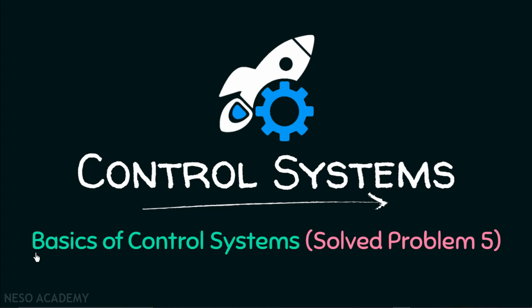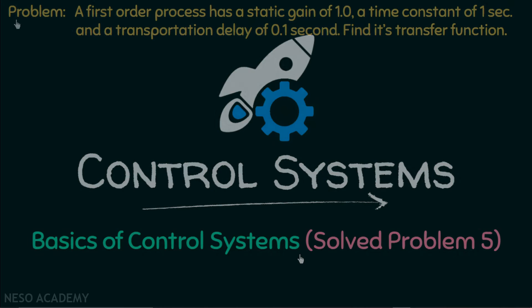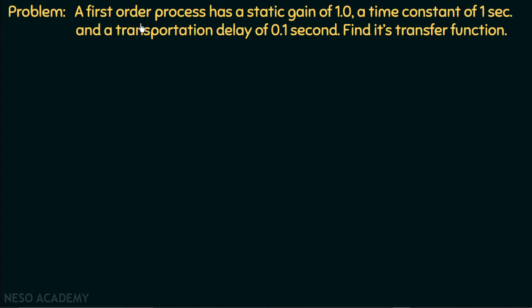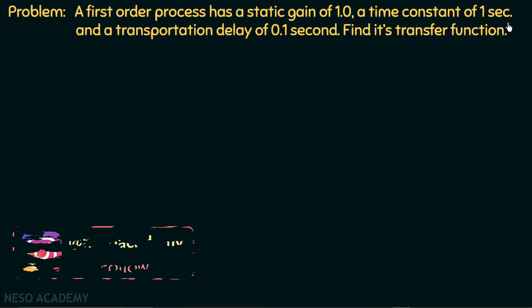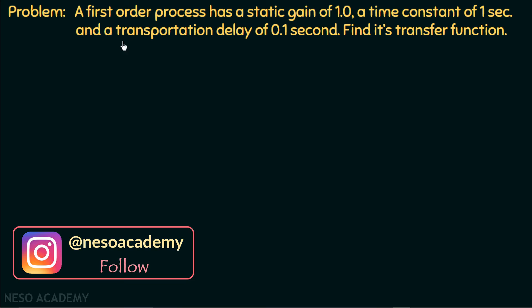In this presentation, we are going to discuss problem number 5 on basics of control systems. A first order process has a static gain of 1, a time constant of 1 second, and a transportation delay of 0.1 second. Find its transfer function.